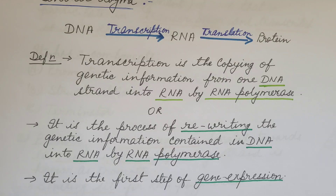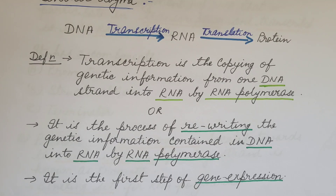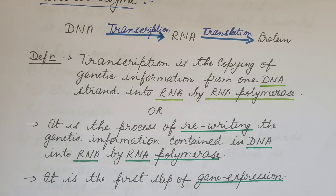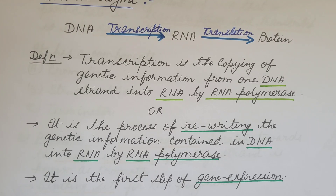By controlling the production of RNA, the cell regulates the rate of gene expression. That is, the rate of gene expression is regulated by controlling the production of messenger RNA.